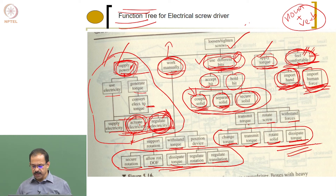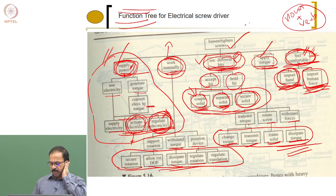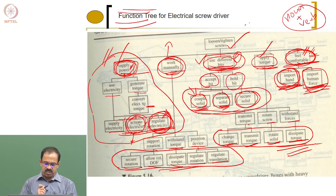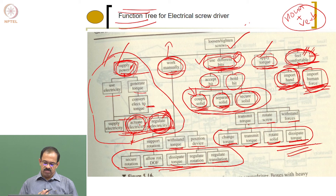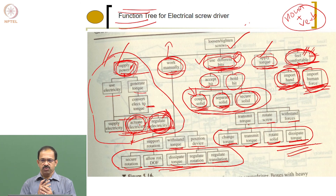We will stop here and continue in the next class. We will then go to another method that can be used for complex products — such as a refrigerator or an automobile — which can have many critical path functions. For those, we look at material, energy, and force interactions to do the decomposition. We will continue in the next class.